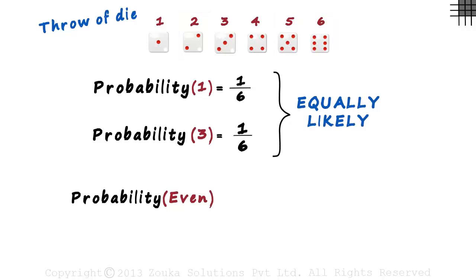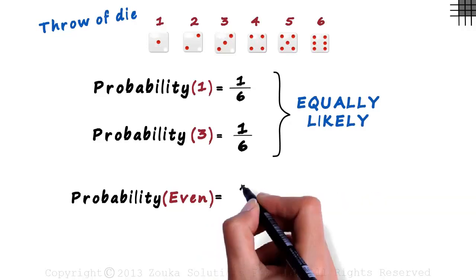Yes, at one throw, I will get just one number, not three. But remember, the numerator tells us the number of ways in which an event can occur. And it can occur in three ways.